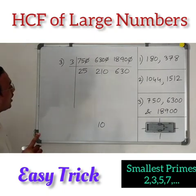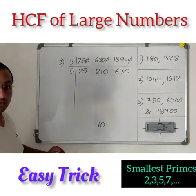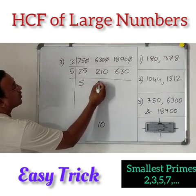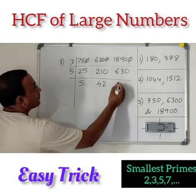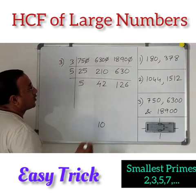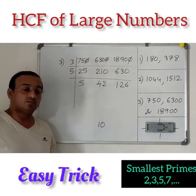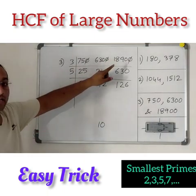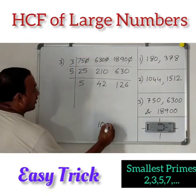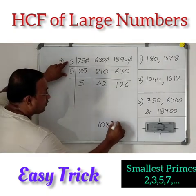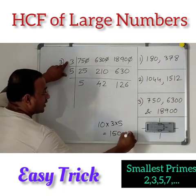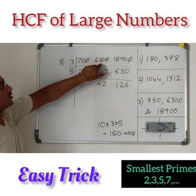Which prime divides all three remaining numbers? I think 5 divides all of them. 25 divided by 5 is 5, 210 divided by 5 is 42, and 630 divided by 5 is 126. No other prime divides all three in common, so we stop. We already have 10 from the canceled zeros, so we multiply: 10 into 3 into 5. That is 10 into 15, which is 150. So the HCF of 750, 6300, and 18900 is 150.